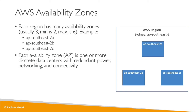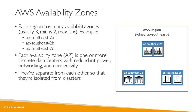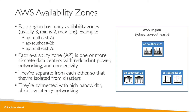Each availability zone consists of one or more discrete data centers with redundant power, networking, and connectivity. So in ap-southeast-2a there might be two data centers, similarly in 2b and 2c — the exact number isn't disclosed. These availability zones are separate from each other so they are isolated from disasters. If something happens to ap-southeast-2a, it is designed not to cascade into 2b or 2c. They are connected with high bandwidth, ultra-low latency networking, and together they form a region.